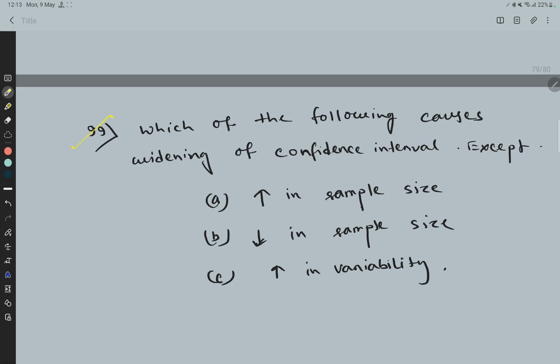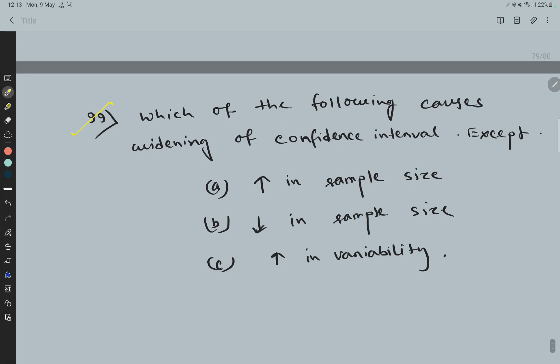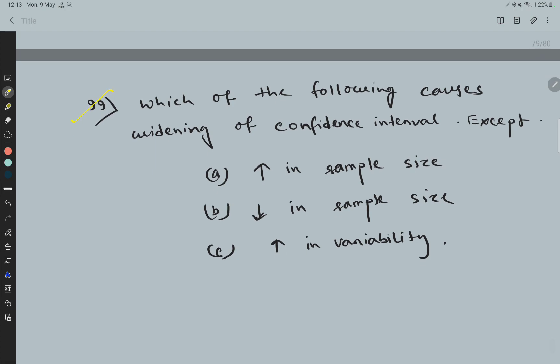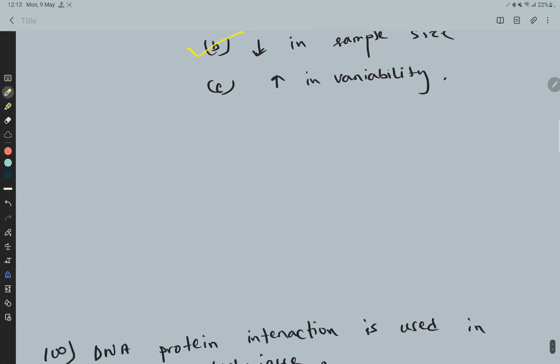Question 99: Which of the following causes widening of confidence interval except: a) Increase in sample size, b) Decrease in sample size, c) Increase in variability. The answer is decrease in sample size.